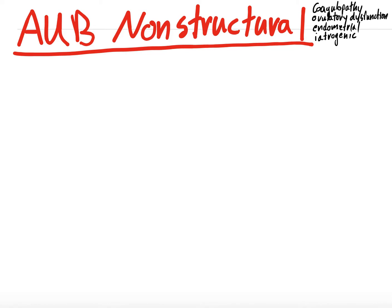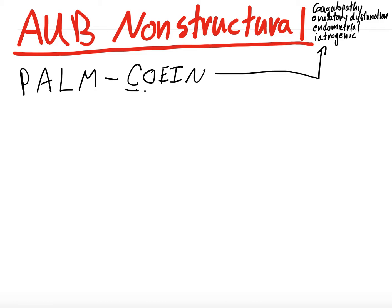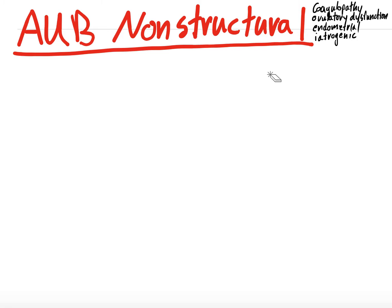Today we are finishing a series on abnormal uterine bleeding. It started with an introductory video, which I'll link in the top right. We went through the differential diagnosis using a mnemonic called PALM-COEIN. We covered P for endometrial polyp, A for adenomyosis, L for leiomyoma, and M for endometrial hyperplasia or carcinoma. This video wraps it all up by discussing the COEIN portion. It's probably valuable to check out at least the introductory abnormal uterine bleeding video first to get some background.